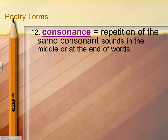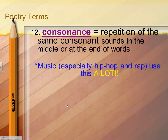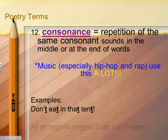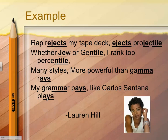Consonance is the repetition of the same consonant sounds in the middle or at the end of words. Remember, it's not at the beginning — that would be alliteration — it's at the end or middle of words. For example, don't eat in that tent. All mammals named Sam are clammy. And this is definitely used a lot in hip-hop, R&B, and rap.